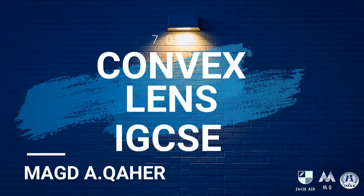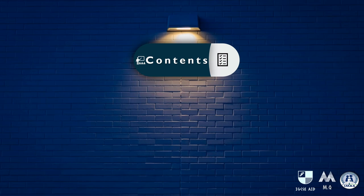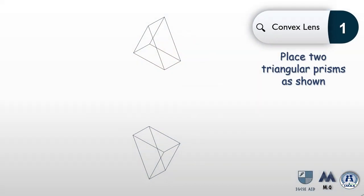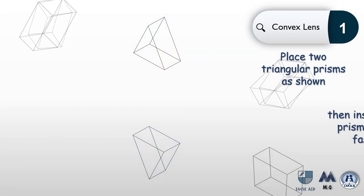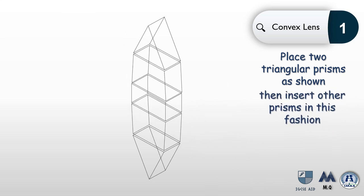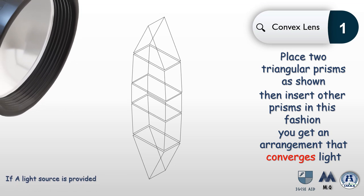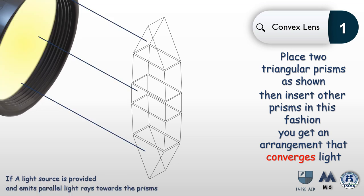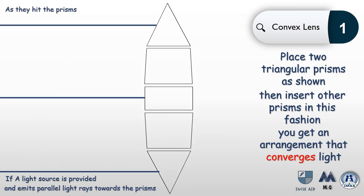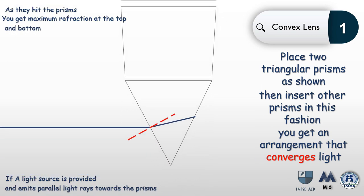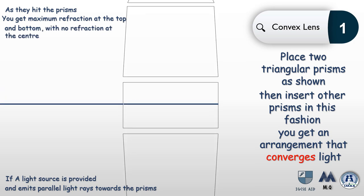One of the essential applications of refraction is the convex lens, which naturally exists in our eyes giving them the ability to form images. Let's talk about the nature and shape of a convex lens. Take two triangular prisms and insert other prisms between them — this arrangement converges light. If a light source emits parallel light rays towards the prisms, the rays hit the prisms and experience maximum refraction at the top and bottom.